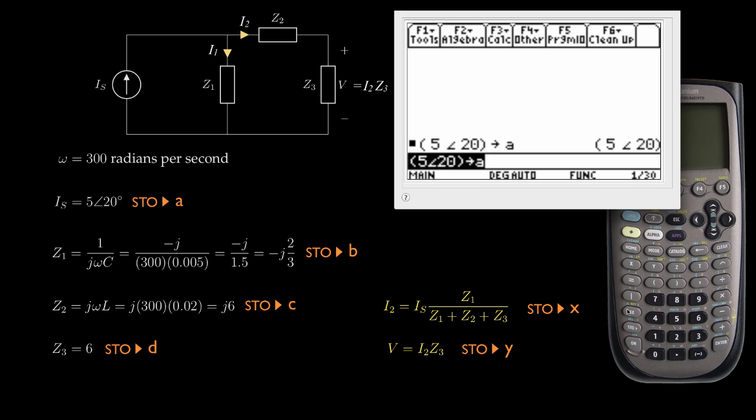Next I'm going to store the impedance Z1 in the variable B, and that's going to be negative j. But for this calculator, they'll use the physics notation i. You can find that at this point—the second key i is here above catalog. We'll need to multiply that times 2 and divide it by 3, and I'll store that in B. So now I've got that number stored.